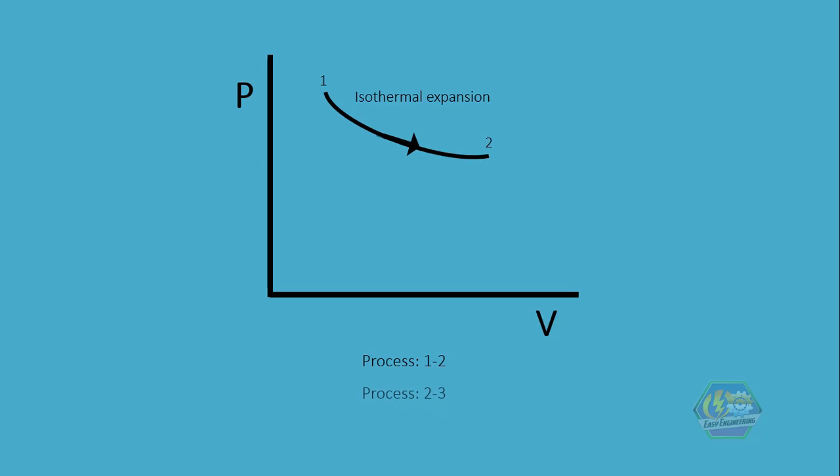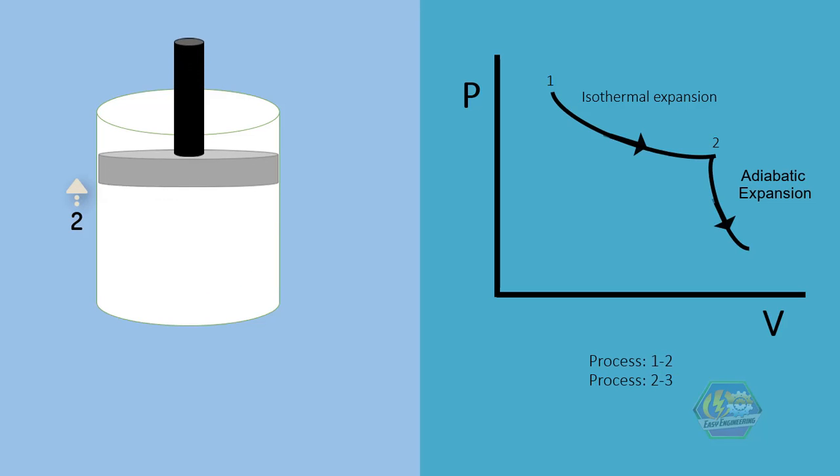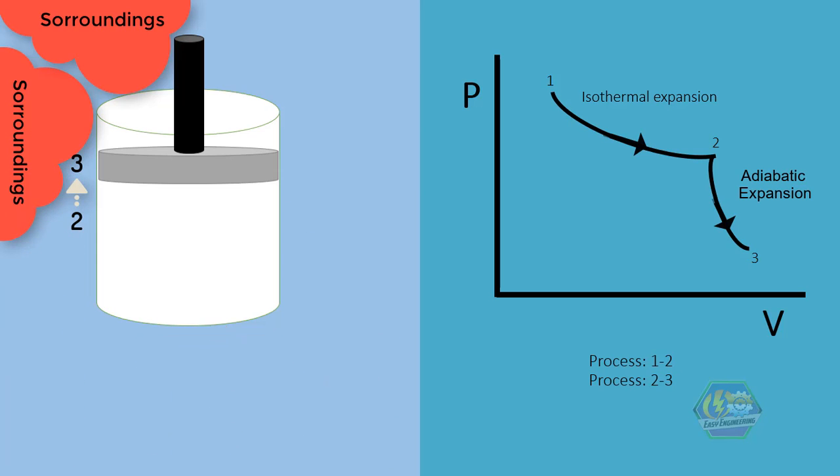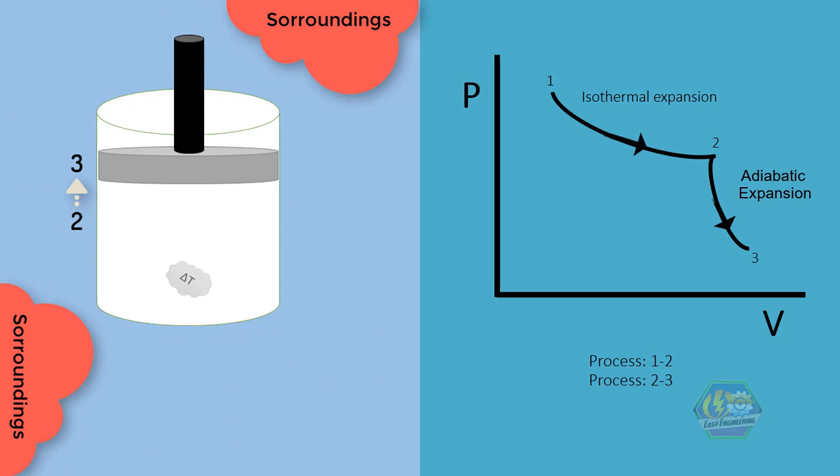Next is process 2 to 3, which is called adiabatic expansion. Adiabatic in thermodynamics means there is no heat transfer between surroundings and your system. All change in temperature is contained within the system, making the entropy zero. On this process, volume increases and pressure decreases.